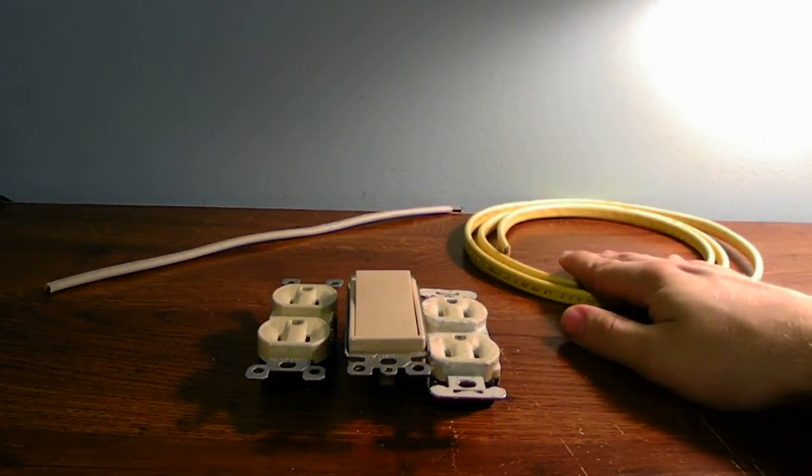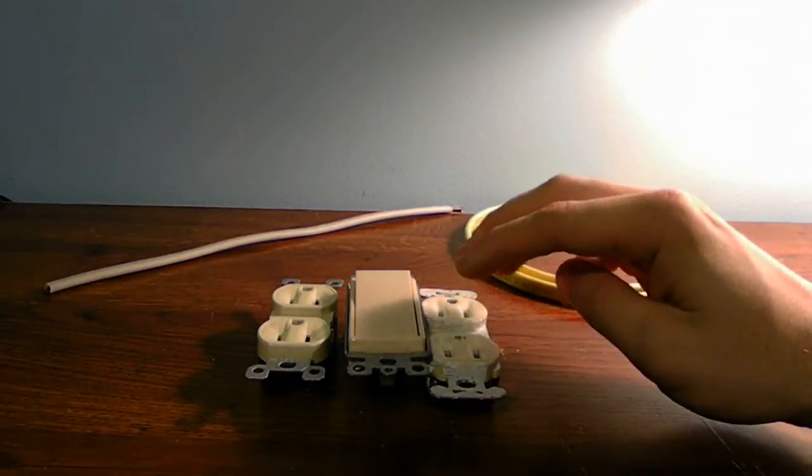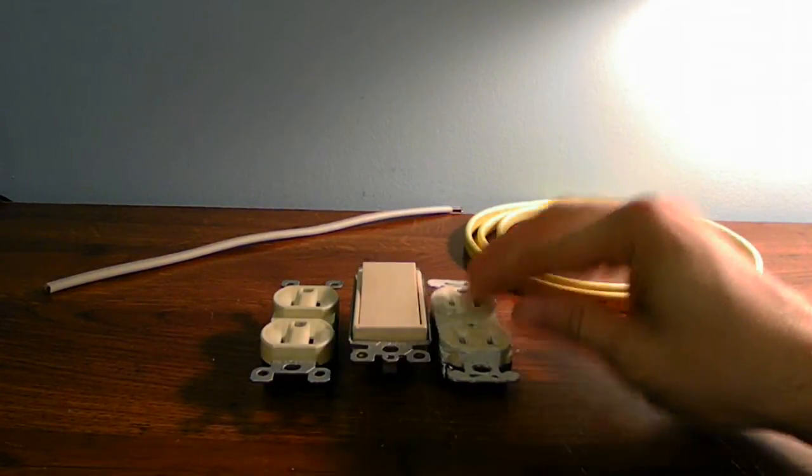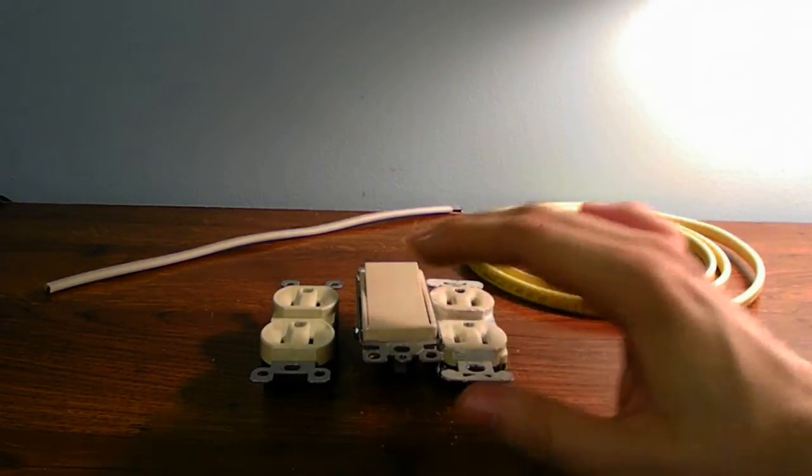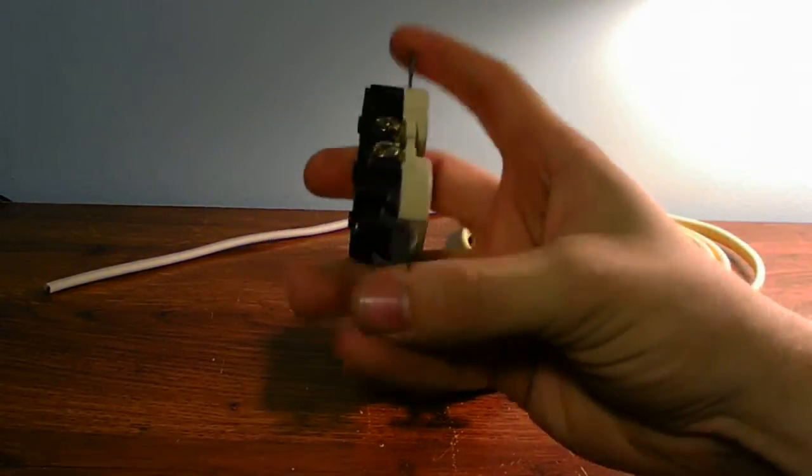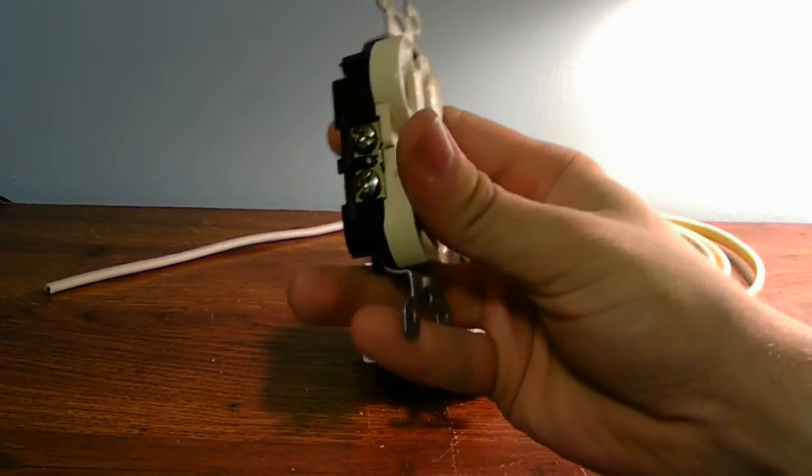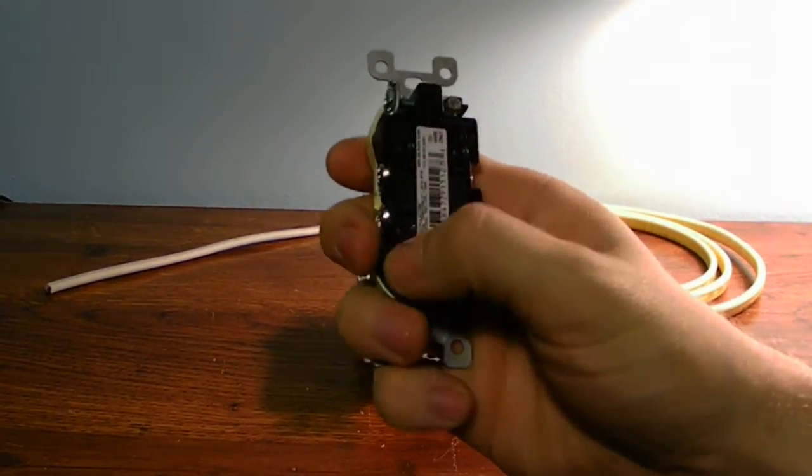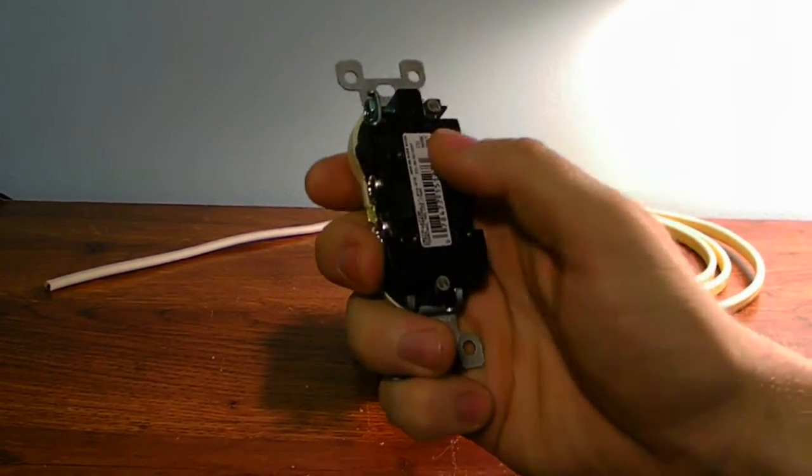But the problem is if you're going to be using a 12-2 gauge wire on a 15-amp outlet, it's not going to work because the wire is too thick to fit in some of these holes. And yeah, it does because sometimes it does happen over time with the outlets coming loose, the connectors can come out of the push-on terminals on the back of the outlet.